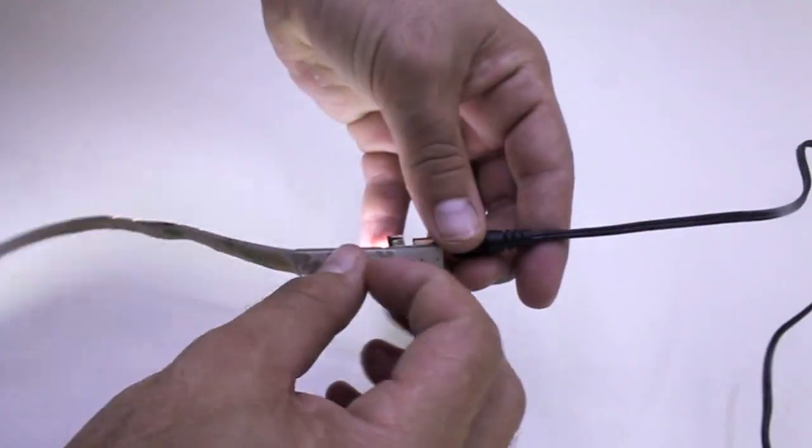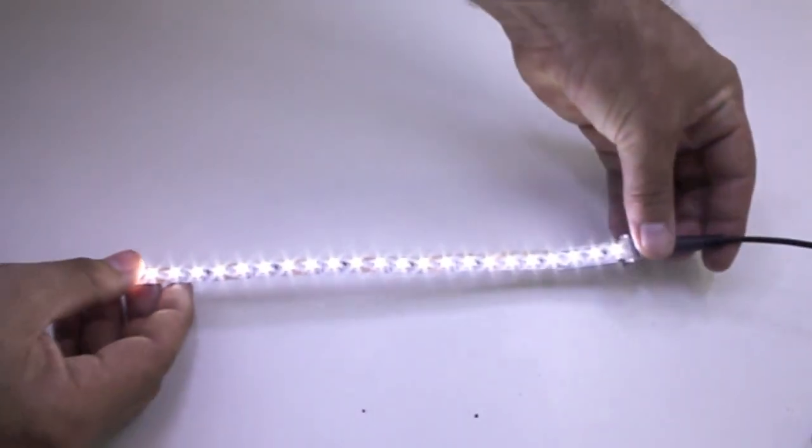Simply plug your power supply in, remove the tape, and stick your LED lights wherever you desire.